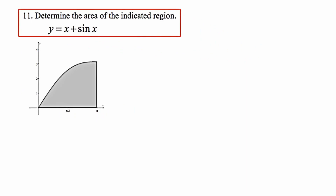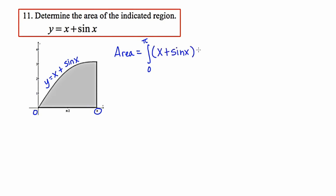In number 11, we're asked to determine the area of the indicated region, defined by the function y equals x plus sine x. Looking at the graph, this region is bounded on the left at x equals 0 and on the right at x equals pi. This is really asking us to find the area under this curve, which requires setting up a definite integral with lower limit 0 and upper limit pi.